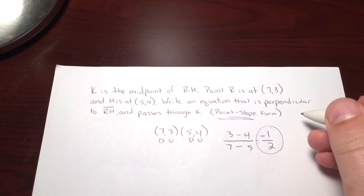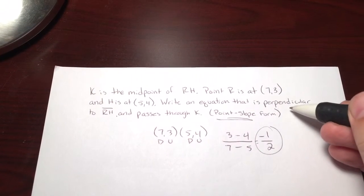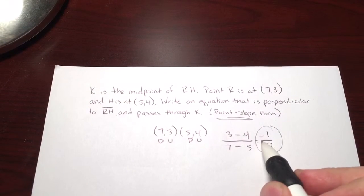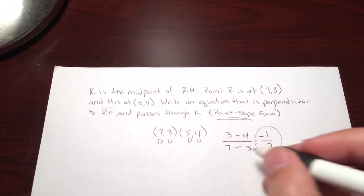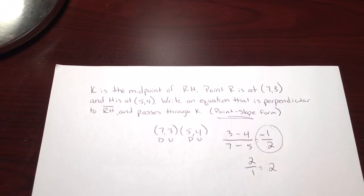This is the slope of the original line RH. We need it to be perpendicular, so we have to use the opposite reciprocal. That means change your sign to a positive and flip it to 2 over 1, which of course simplifies to just a 2.